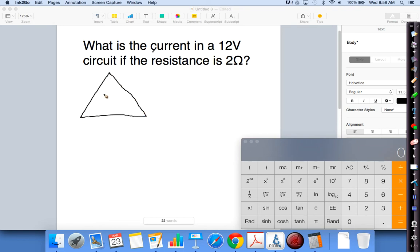So our triangle will have V, or voltage, on top, I for current, and resistance on the bottom. They want to know the current, we're looking for I, so cover up, and I equals voltage divided by resistance.